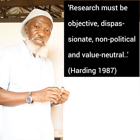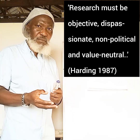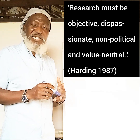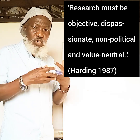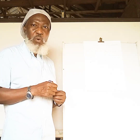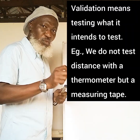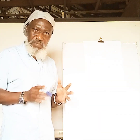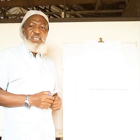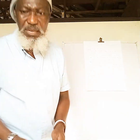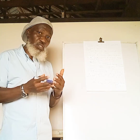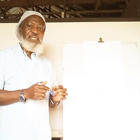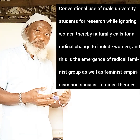According to Harding, who is well known in research, writing in 1987, research must be objective: dispassionate, non-political, and value-neutral. When we achieve that, we head towards better results — where the result validates what it intends to test. The four categorizations of women must be included in research. If we only have male university students as research participants, the categorization is problematic.